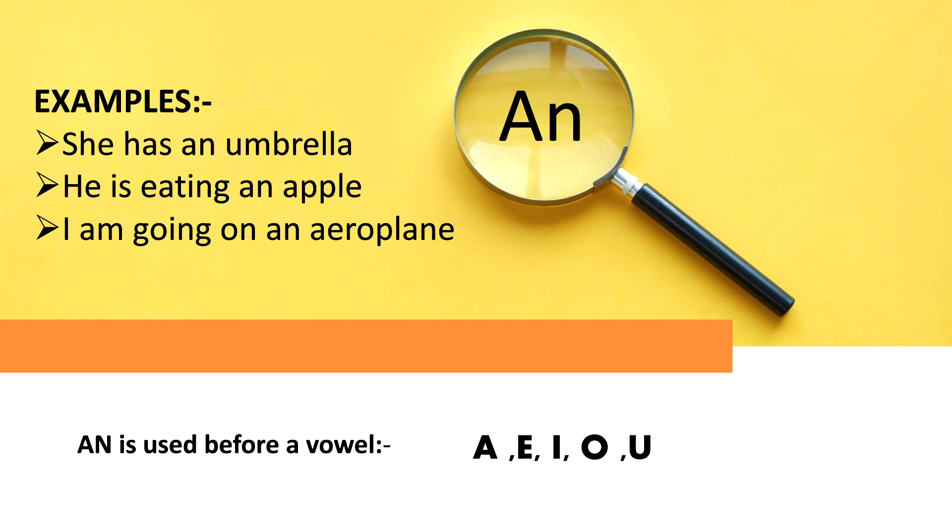Before these words, 'an' is used. For example, she has an umbrella. Here, if you see, 'u' is a vowel, so we are using 'an' in this case. She is eating an apple—'a' is a vowel in this case and we are using 'an'. The third example is I am going on an airplane.